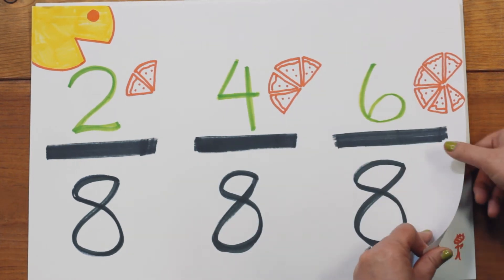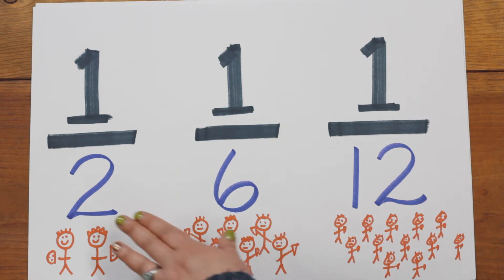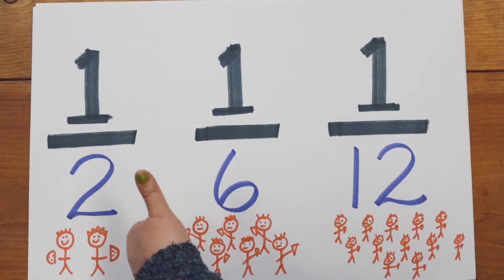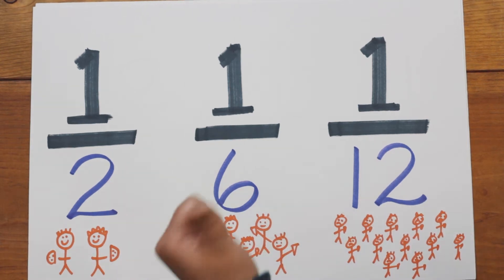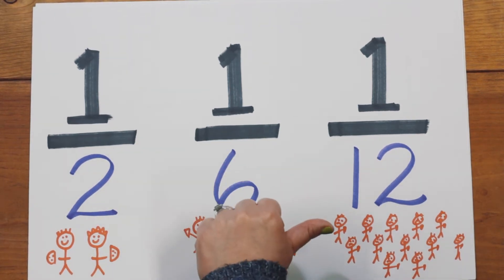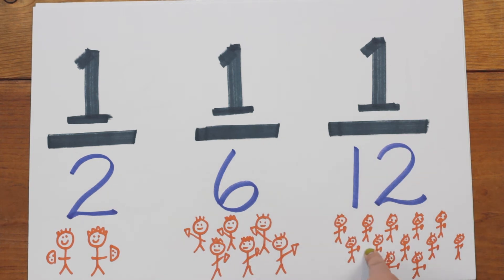The bottom of a fraction represents how many people come to my party. Yay, I get to have a whole pizza shared between me and a friend. Or, eh, now I have to share with six people. Or, boo, now I have to share with 12 people.